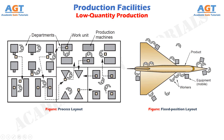Different parts, each requiring a different operation sequence, are routed through the departments in the particular order needed for their processing, usually in batches. The process layout is noted for its flexibility — it can accommodate a great variety of operation sequences for different part configurations. Its disadvantage is that the machinery and methods to produce a part are not designed for high efficiency.